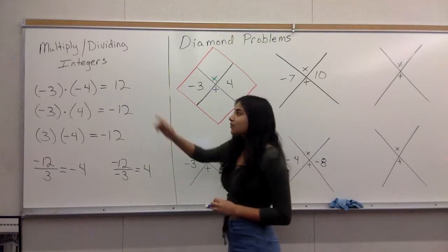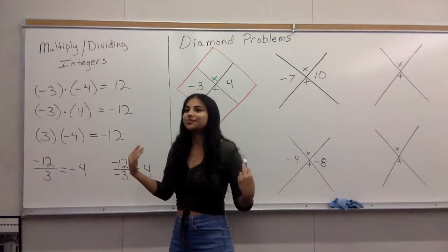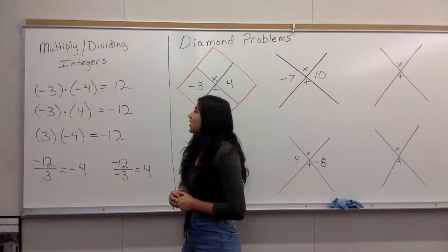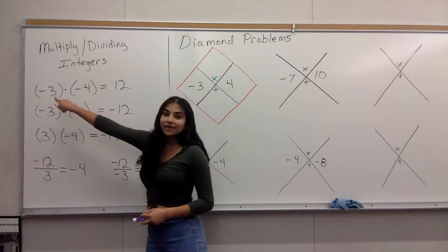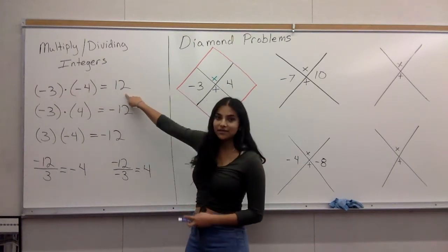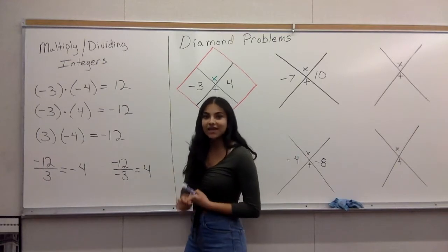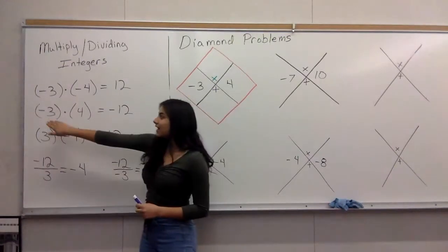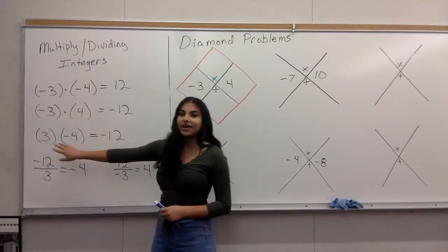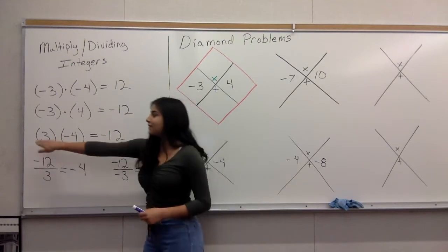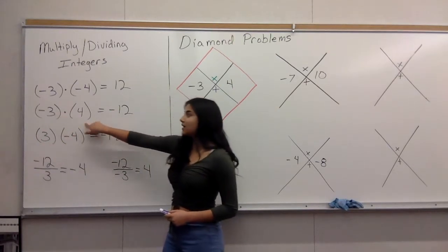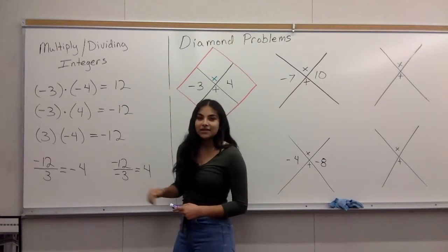These are the rules you're going to have to remember in order to multiply and divide positive and negative numbers correctly. A negative multiplying another negative is going to equal a positive — a negative times a negative equals a positive. And a negative times a positive equals a negative. It doesn't matter which number is bigger or whether the negative is on the first or second number. If it's a negative multiplying a positive, it's going to be a negative answer.